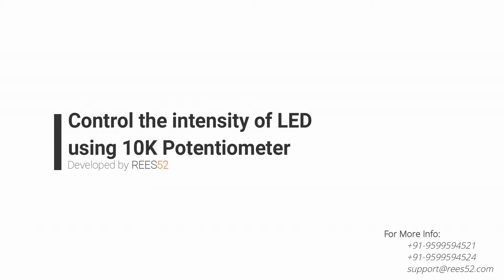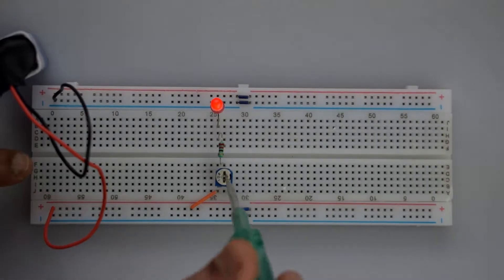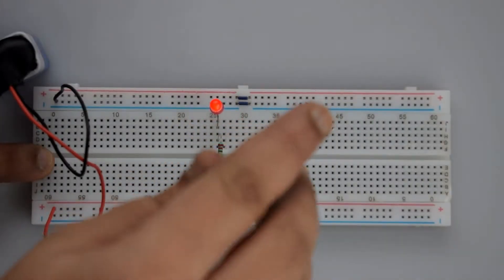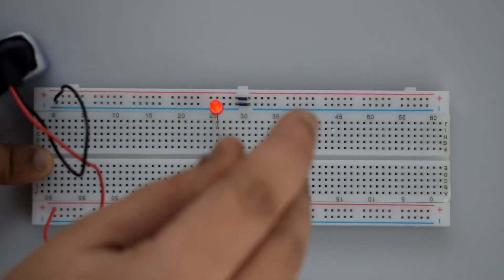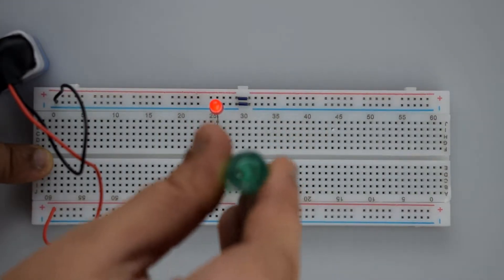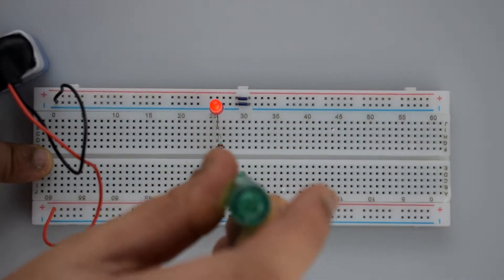Hello everyone, welcome to our channel v52.com. In this video, we will control the intensity of LED using a 10k potentiometer. This is a very simple project using just two basic components.